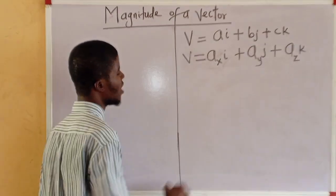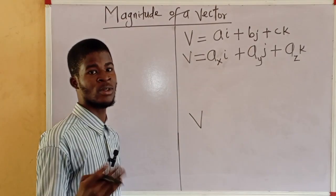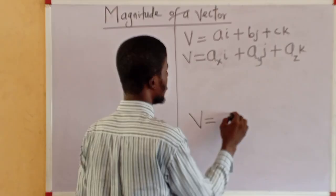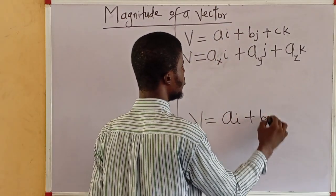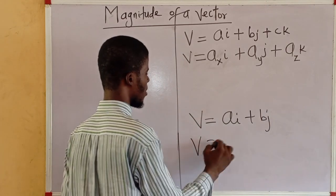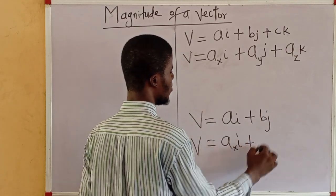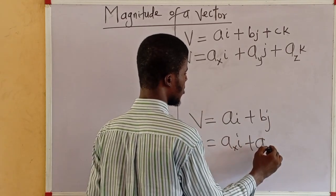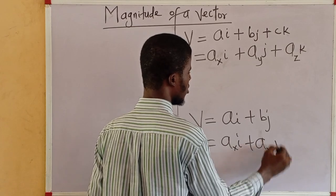Then for a vector in two dimension, we have just the x and y axes only. ai + bj, a sub x i plus a sub y j.